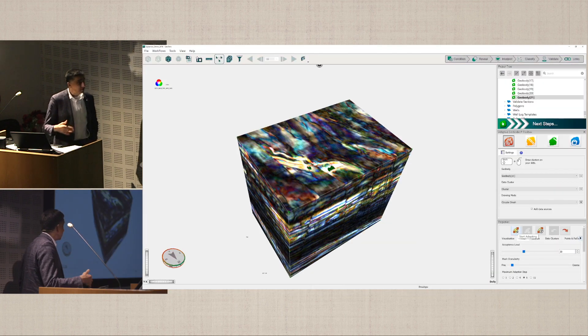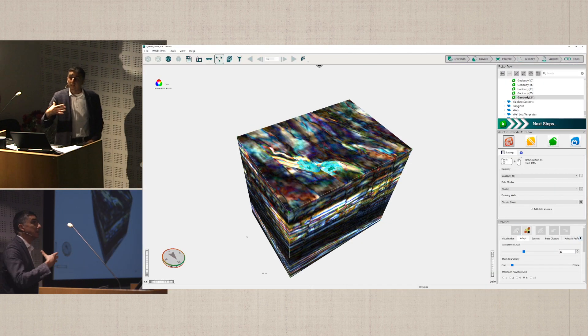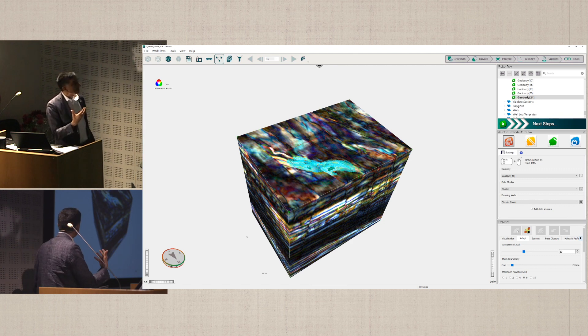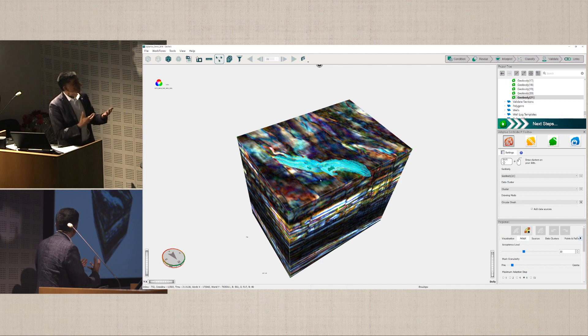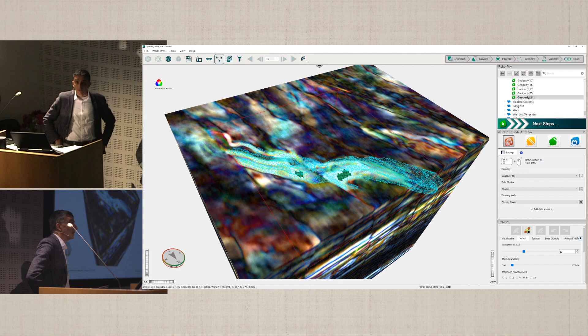The next one is geobody extraction. Similar - we try and build a multi-dimensional dataset, a probability density function if you wish, and that will allow us, using seed points defined by the interpreter, the human factor in this case.